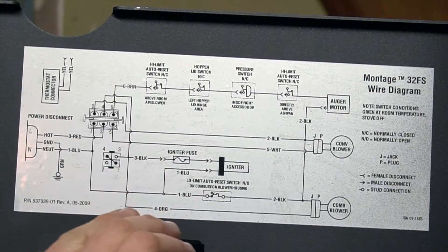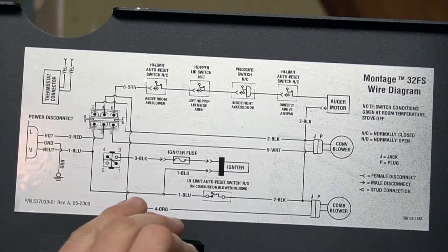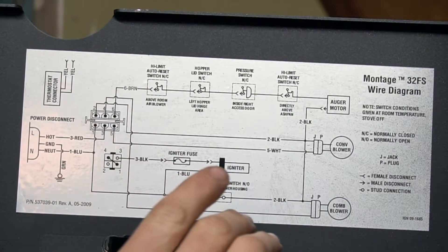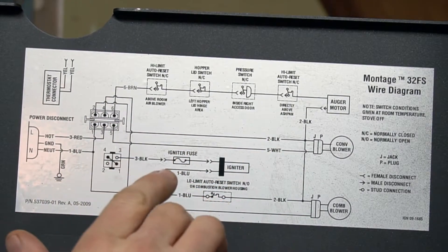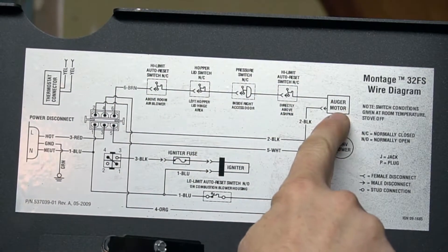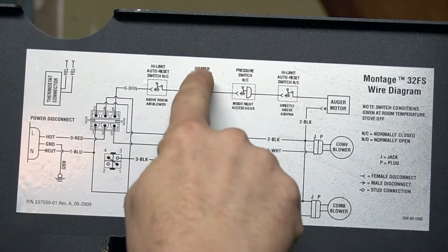All right, so here is the electrical schematic for how all the wires connect up on this. And one of the things about the stove is that all of your sensors that control the auger motor are in line with one another